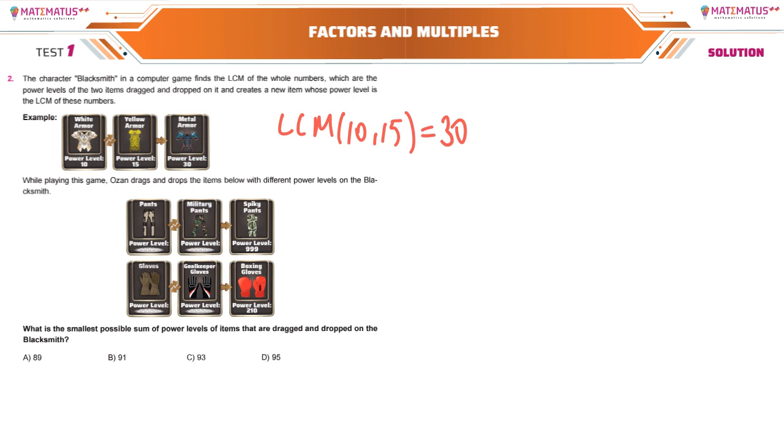According to this example, we have two other given situations. Let's say the first one is A and the second one is B. The lowest common multiple of A and B is 999. In the second question we have X and Y values, so the lowest common multiple of X and Y is 210.